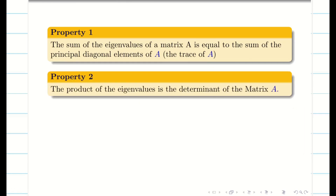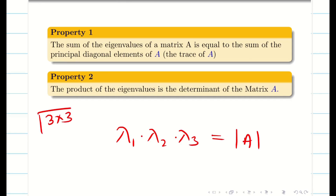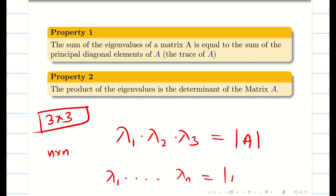Property 2: the product of the eigenvalues is equal to the determinant of the matrix A. So lambda 1 times lambda 2 times lambda 3 gives you determinant of A. For a 3x3 matrix we have 3 eigenvalues; for a 4x4 we have 4. In general, for an n×n matrix, the product of n eigenvalues equals determinant of A.